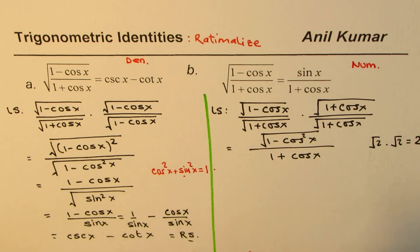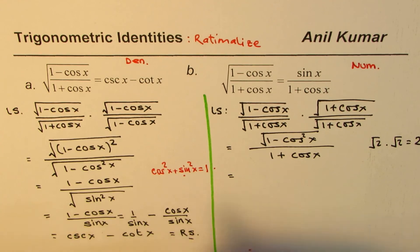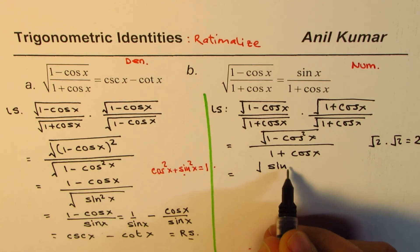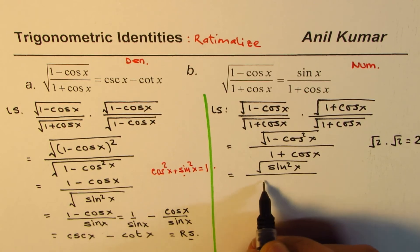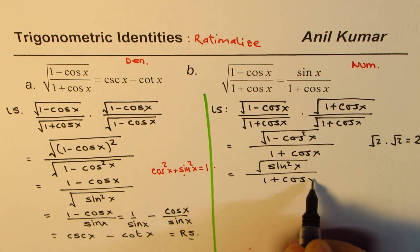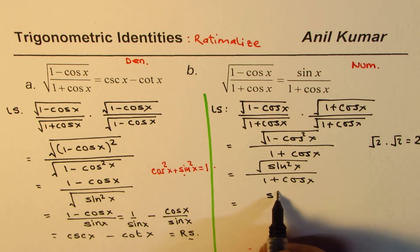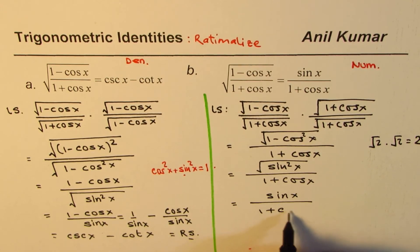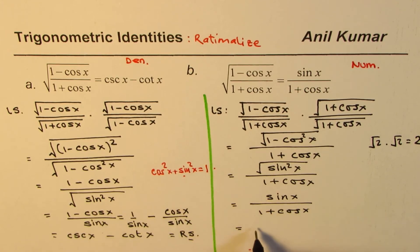Now, 1 minus cos squared x is sine squared x, just as we found before. So we get square root of sine squared x divided by (1 plus cos x). The square root of sine squared x is sin x, divided by (1 plus cos x), which is exactly the right side.